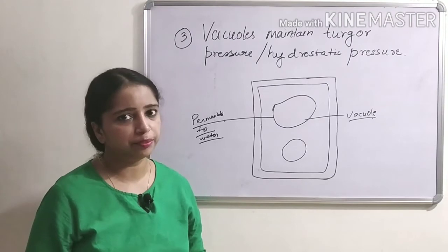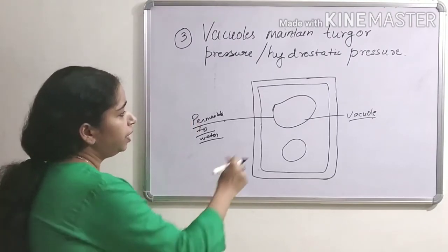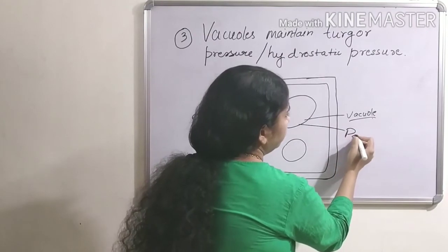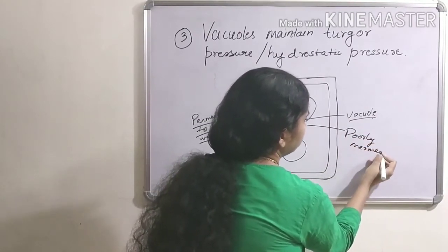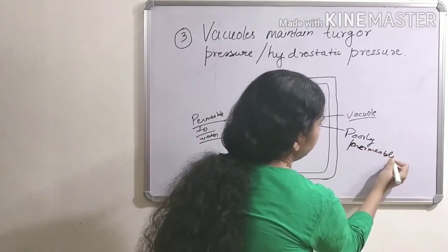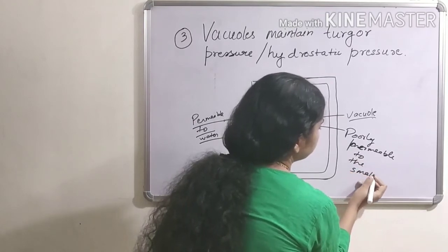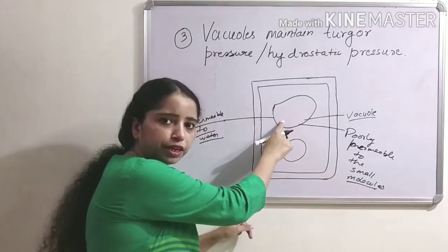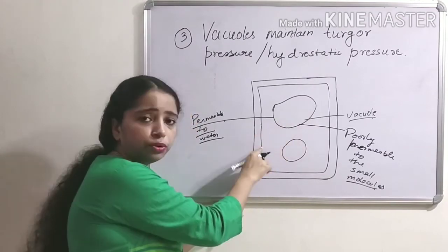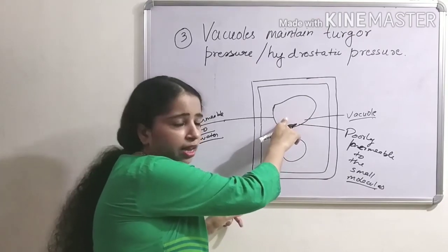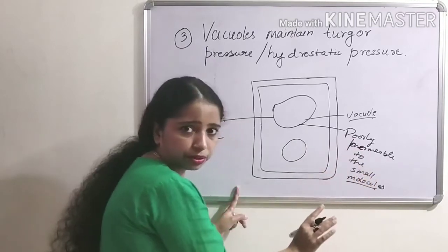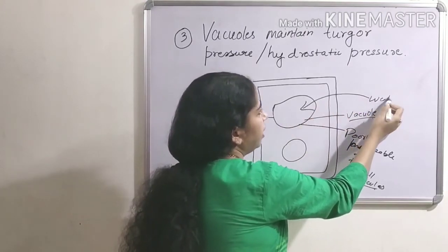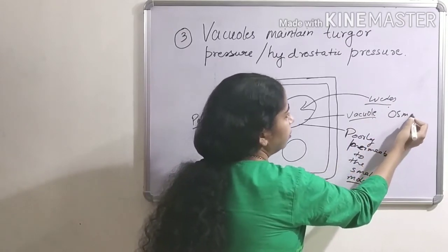Now coming to the third function of vacuoles, which is maintenance of hydrostatic pressure or turgor pressure inside the cell. Now how does it happen? The membrane of vacuole is permeable to water but poorly permeable to these small molecules stored within it. And because of this, the solute concentration is higher inside the vacuole as compared to cytosol or extracellular fluid. And because of this, water enters the vacuole due to osmotic flow.